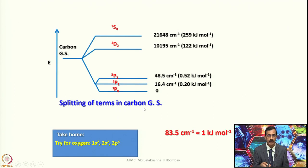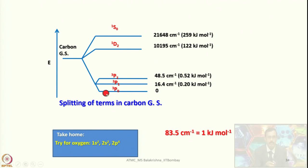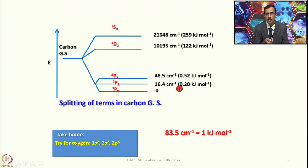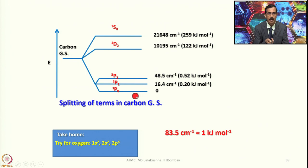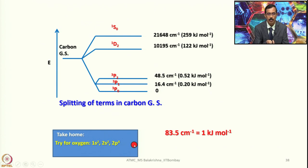All these results are consolidated in this figure. The ground term ³P₀ is the lowest energy, then ³P₁, then ³P₂, with corresponding energies shown in kJ/mol and cm⁻¹ (conversion: 83.5 cm⁻¹ = 1 kJ/mol), along with ¹D and ¹S. This shows the complete splitting of terms in the carbon ground state. As an exercise, try the same for oxygen: 1s²2s²2p⁴.